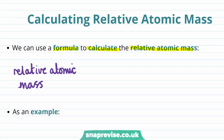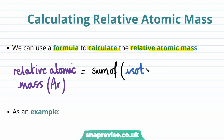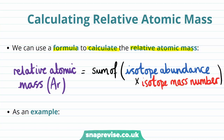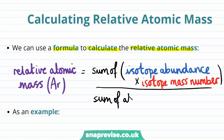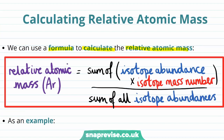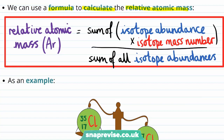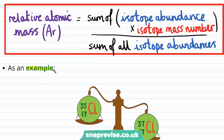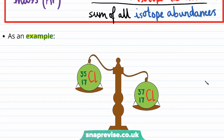The formula is that the relative atomic mass, or Ar value for an element, is equal to the sum of the isotope abundance multiplied by the isotope mass number, all divided by the sum of all isotope abundances. We can see what all of these terms mean by looking at an example — chlorine, which exists as two different isotopes with mass numbers of 35 and 37.